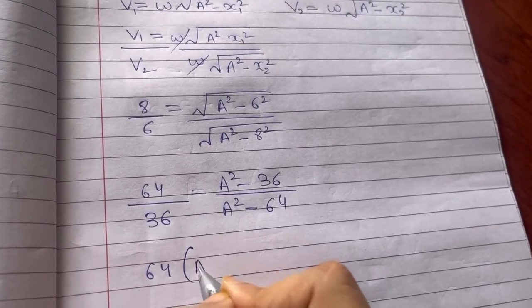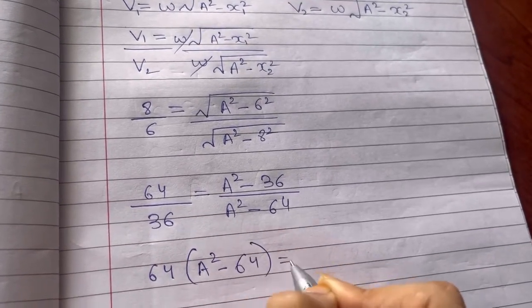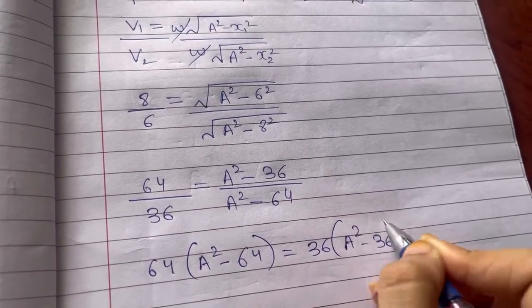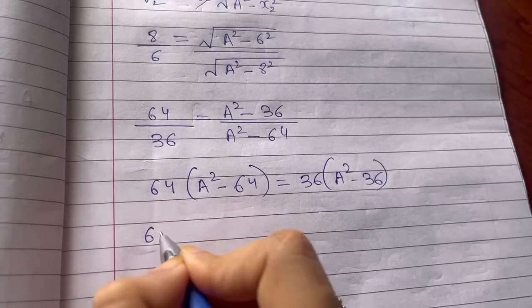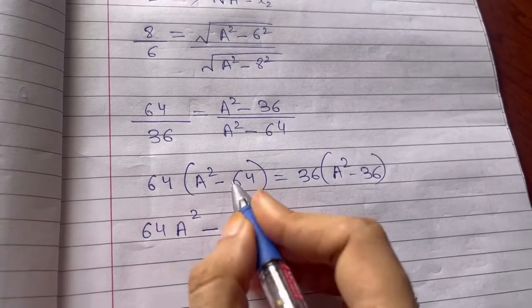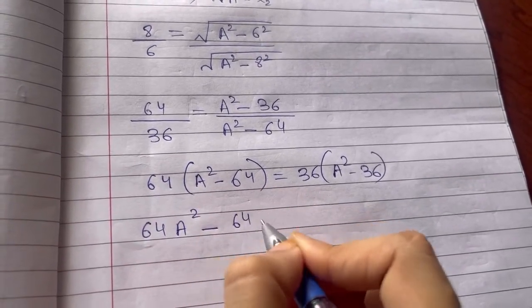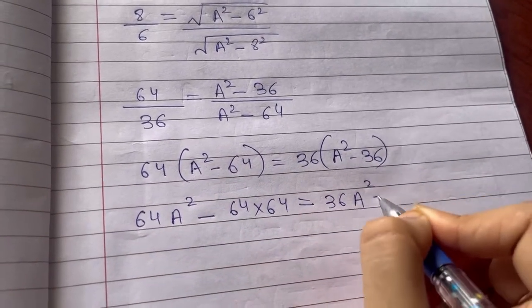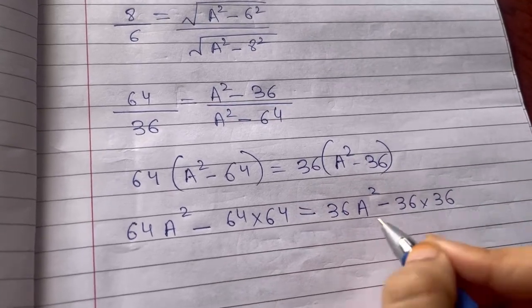64 times A square minus 64. Then your 36 A square minus 36, so it is 64 A square minus 64 into 64. Here 36 A square minus 36 into 36.